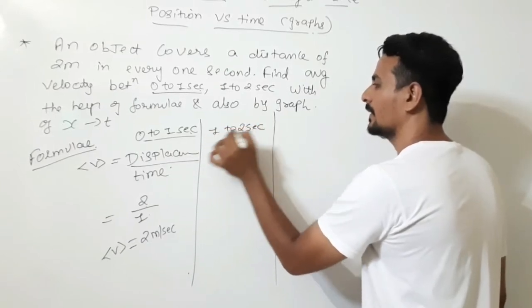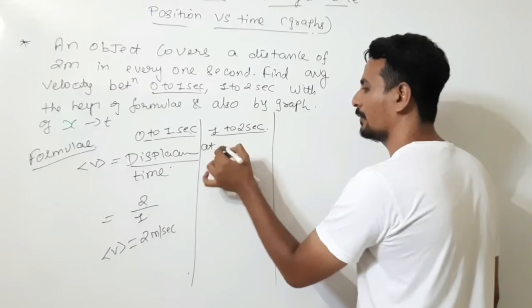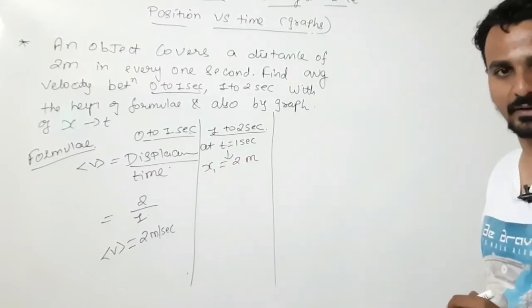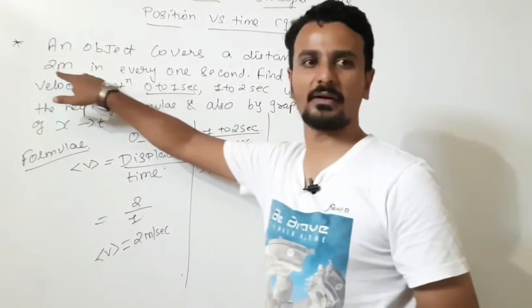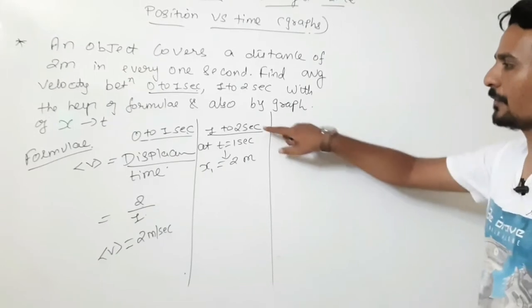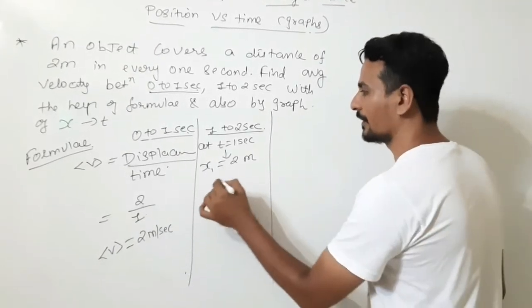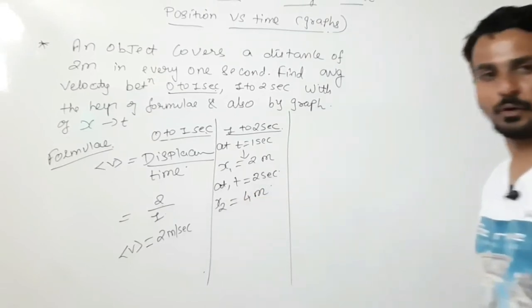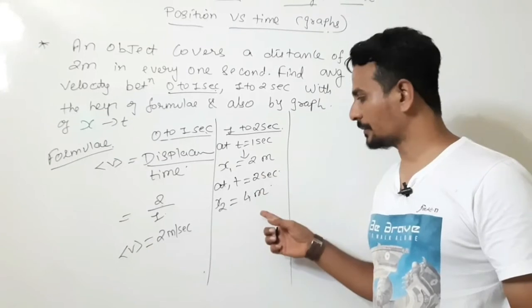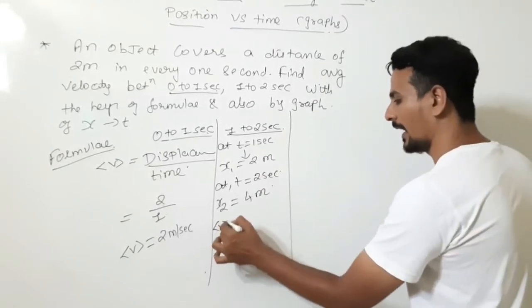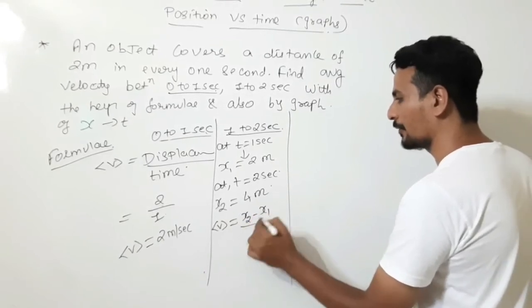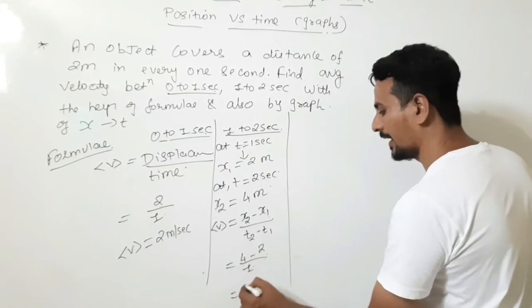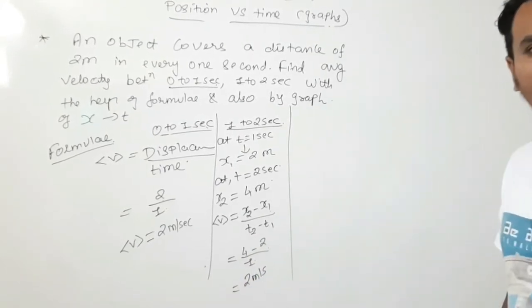For the next case, between 1 to 2 seconds: at t = 1 second the object is at a distance of 2 meters, because it travels 2 meters in every second. At t = 2 seconds it will be 4 meters away from the origin. So using the formula, average velocity equals final position minus initial position divided by time: (4 − 2) / 1 = 2 meters per second. So average velocity is again 2 meters per second.